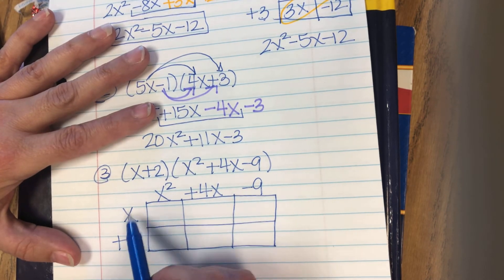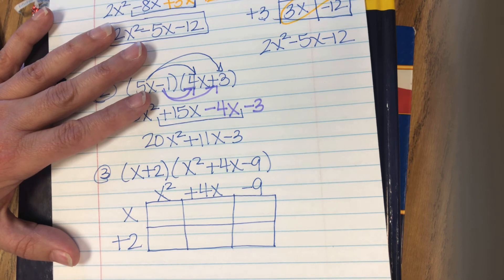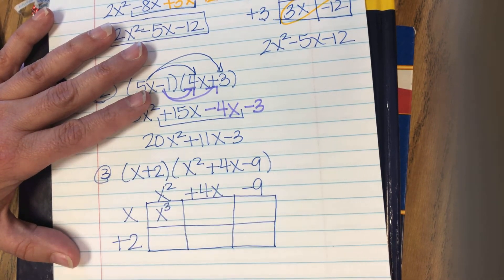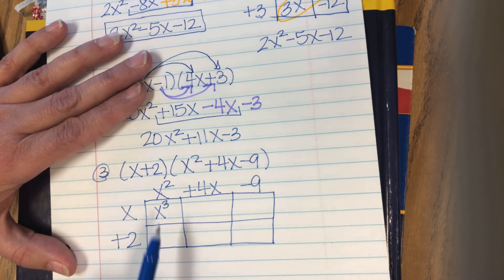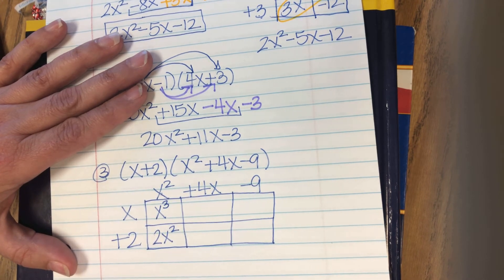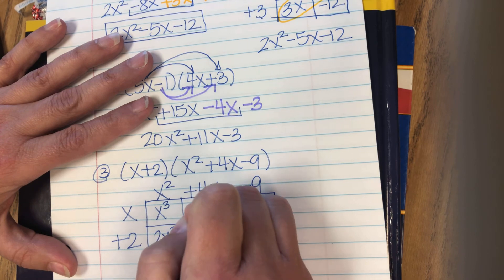So then we multiply x times x squared. If x times x was x squared, x times x squared is x cubed because there's three of them. Then we do x squared times 2 is 2x squared. 4x times x is 4x squared.